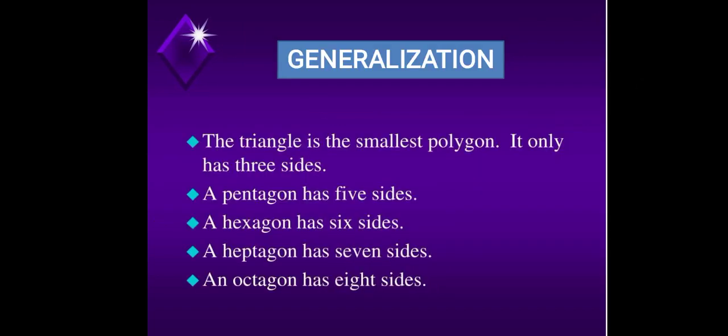For the generalization, the triangle is the smallest polygon. It only has three sides. Pentagon has five sides. Hexagon has six sides. Heptagon has seven sides. And an octagon has eight sides.